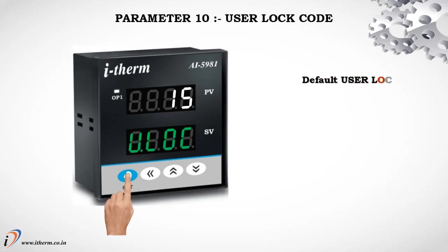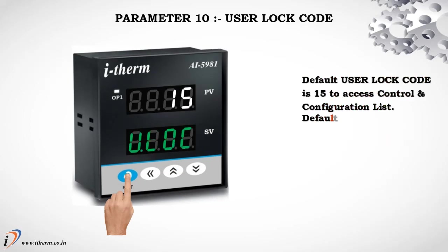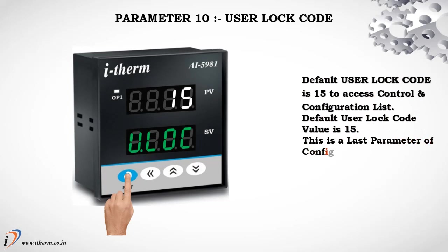Parameter 10: User Lock Code. The default user lock code is 15, used to access the control and configuration list. This is the last parameter of Configurational Mode.